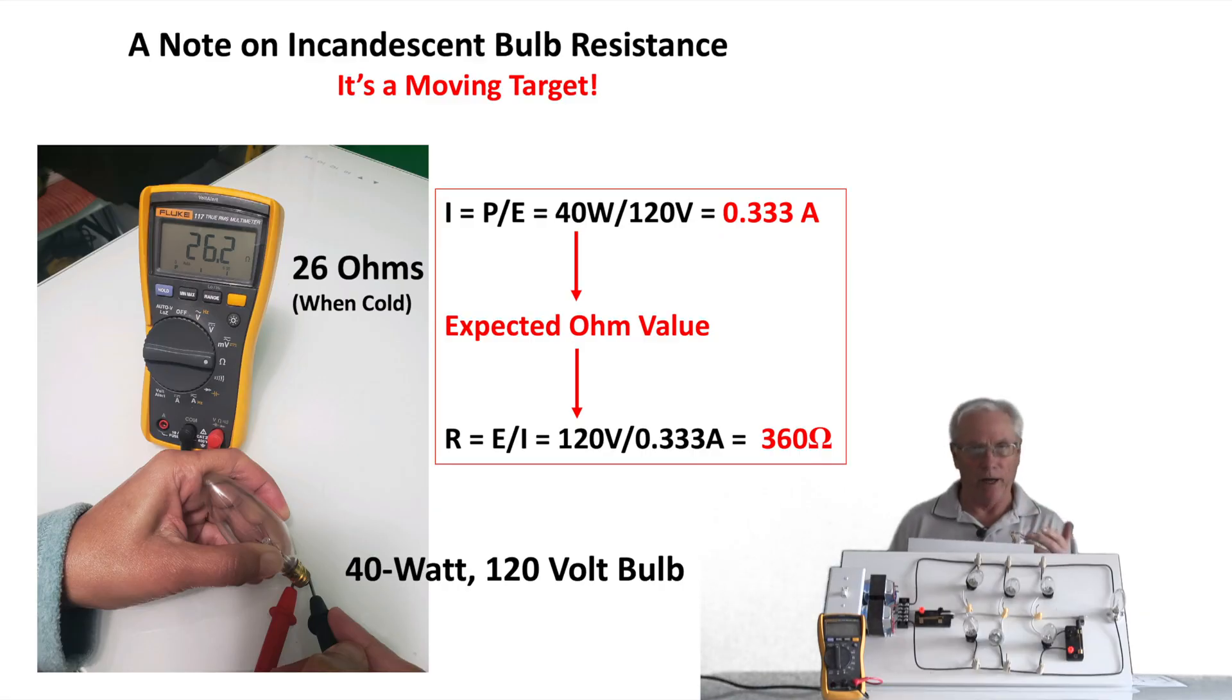You can see when I measured one of these 40 watt 120 volt rated bulbs I ended up with 26 ohms, and that's not really what you would expect. If you do the math, 40 watts divided by 120 volts gives 0.333 amps of current flow, and resistance equals E over I, so 120 over 0.333 amps gives an expected resistance of 360 ohms.